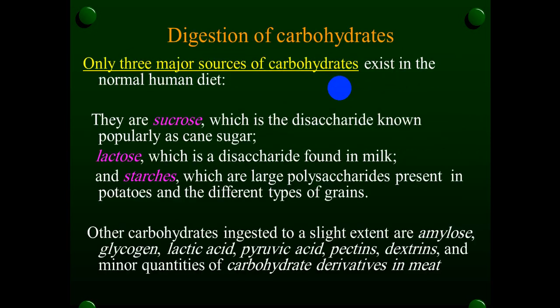So here we will talk about the digestion of these items — carbohydrate, fat, and protein. We will start by talking about digestion of carbohydrate. Only three major sources of carbohydrate exist in the normal human diet, and these are sucrose, lactose, and starches.